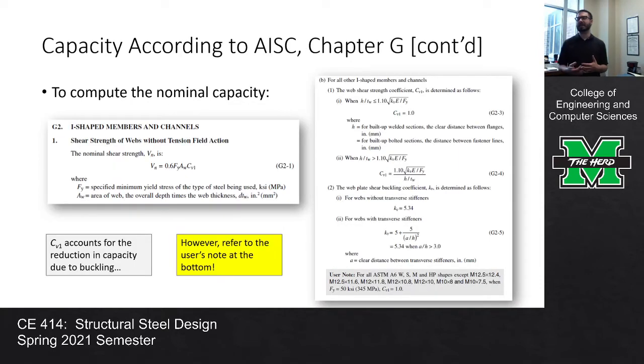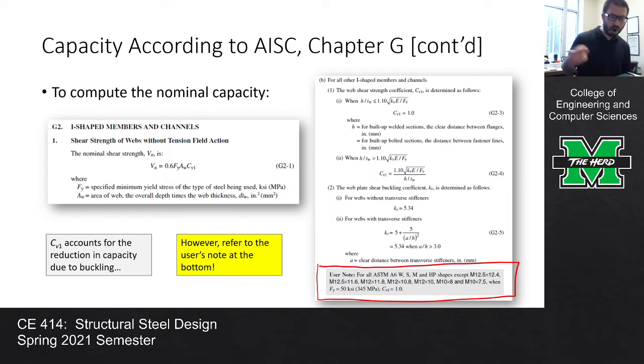Now for the capacity, the capacity is 0.6 FY times the area of the web which is just D times TW and then there is the CV computation. First off, CV is going to be 1 for all W shapes with 50 KSI steel and you can actually refer to this user's note again at the bottom and it says for all ASTM A6, W, M, S, and HP shapes, so for all W shapes except the ones listed here and there are no W shapes listed, CV is 1. And again, what is CV? CV just reduces the capacity to account for the possibility of buckling, but with W shapes the web is so stocky that buckling just doesn't really happen with W shapes of 50 KSI steel. So you never really need to worry about it and we'll see how the math bears that out in a second.